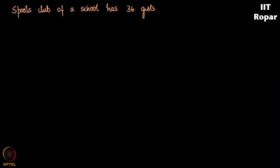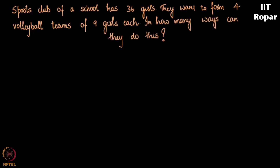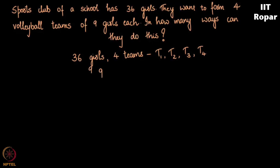The sports club of a school has 36 girls and they wish to form four volleyball teams of nine girls each. In how many ways can they do this? There is a sports club of 36 girls and four volleyball teams have to be formed. Let me name them T1, T2, T3 and T4, and each team will have nine girls.